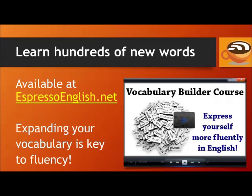If you want to learn hundreds of new words, check out the Vocabulary Builder course available at EspressoEnglish.net. Expanding your vocabulary is key to fluency, and this course has two levels. Level 1 is for pre-intermediate and intermediate students, and Level 2 is for upper-intermediate and advanced. You can also buy both levels together at a discount. Visit EspressoEnglish.net, click on Courses, and look for the Vocabulary Builder.